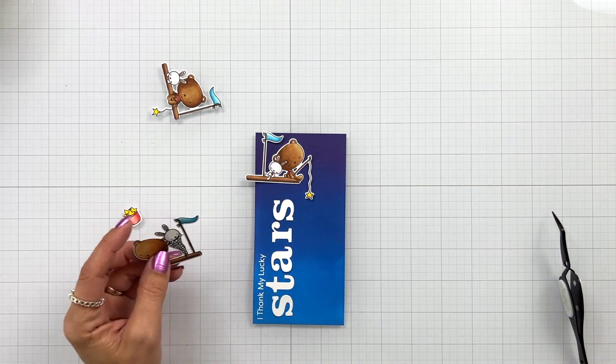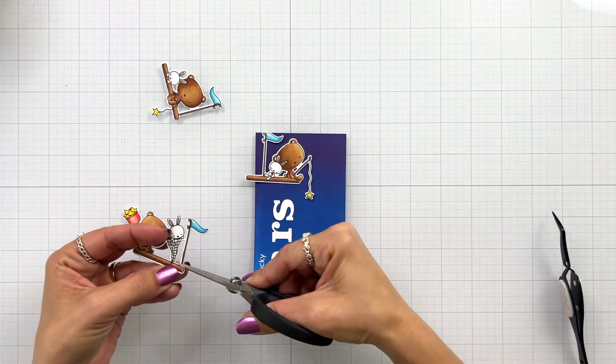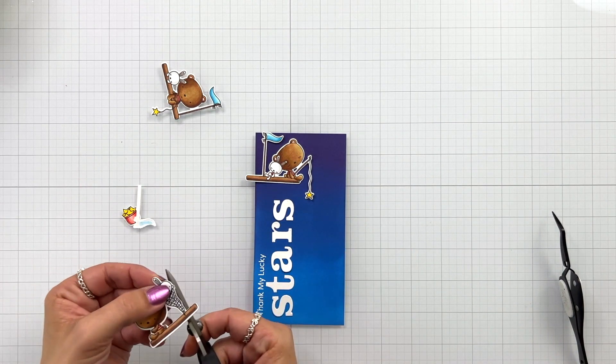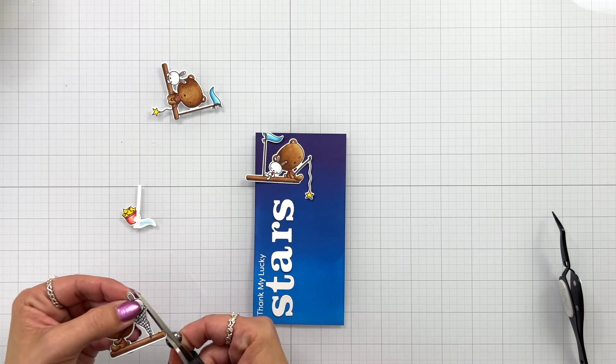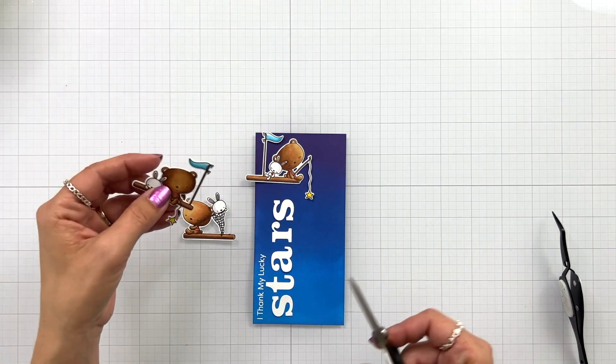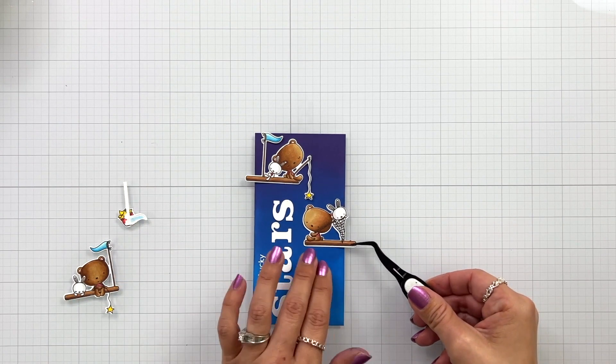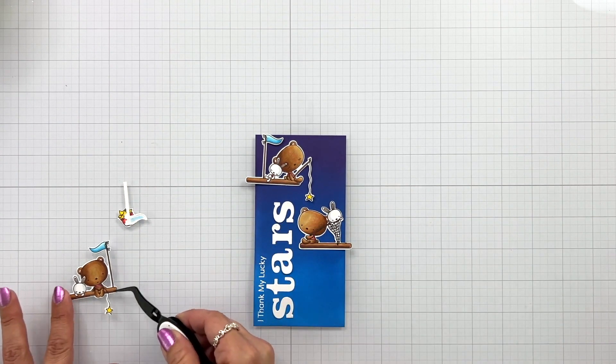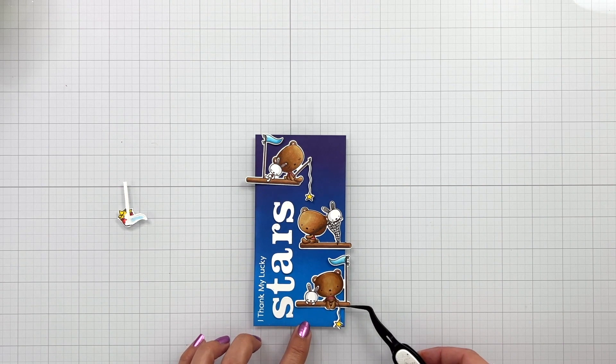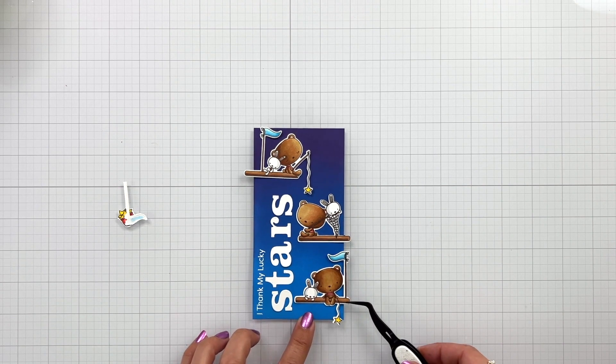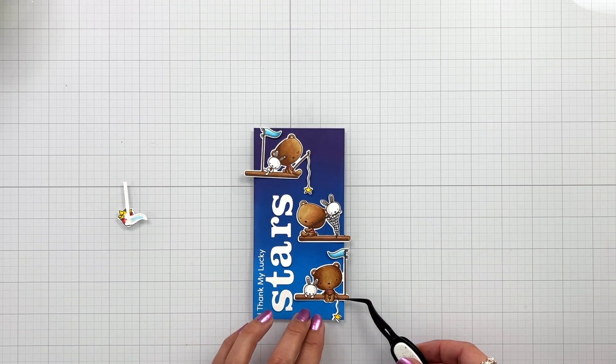Now I can bring in my images and start setting my scene. Off screen I die cut the word stars out of that modern serif alphabet using white cardstock that's really going to pop off of the background. And here I'm arranging my bears. Some of them are going to hang off the edge of the cardstock and that flag I thought it was just easier to trim that off.